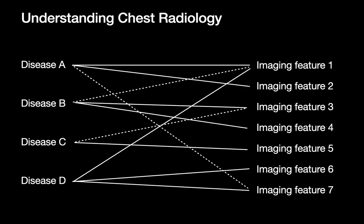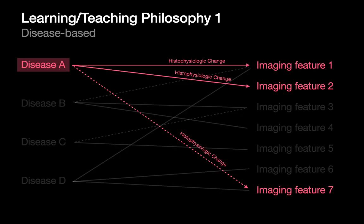When it comes to understanding chest radiology, it quickly dawns on many of us that it's this complicated relationship of different diseases and different imaging features. It's an important thing to learn as we embark on trying to interpret chest imaging, and there are two philosophies we can take. One traditional way is to study a disease — disease A, for example — and the different imaging features associated with it. Sometimes those relationships are relatively strong, and sometimes the relationship may be a weaker one.